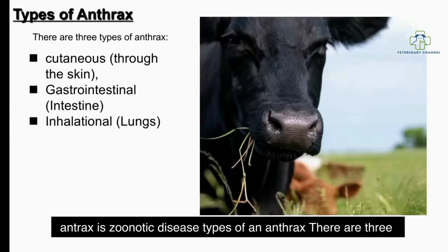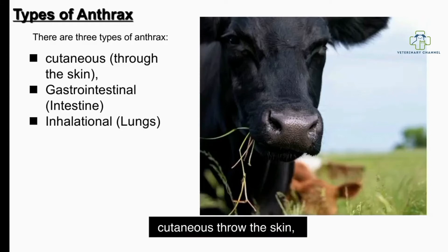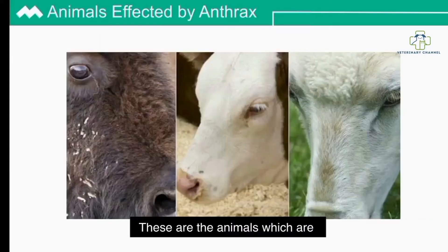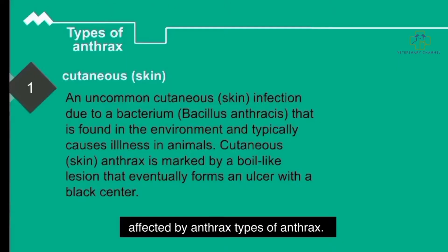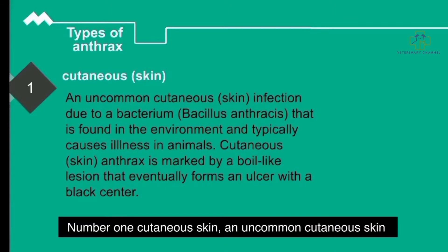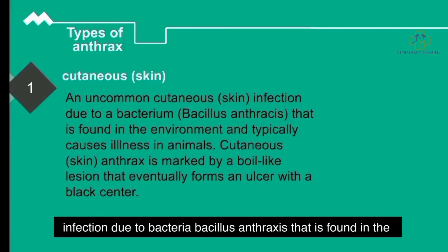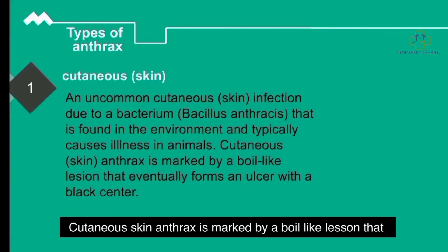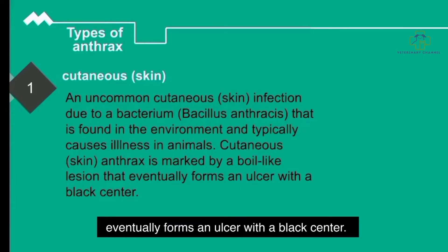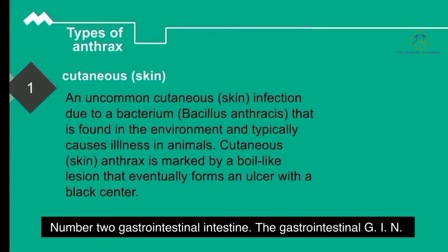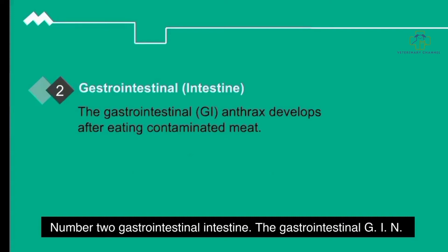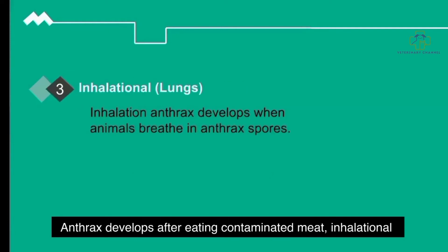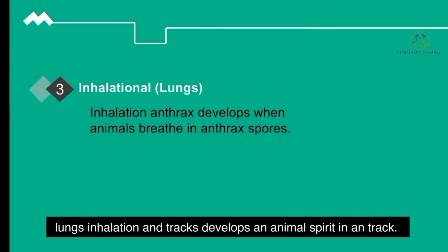There are three types of anthrax: through the skin (cutaneous), gastrointestinal (intestine), and inhalational (lungs). Cutaneous anthrax is an uncommon skin infection due to Bacillus anthracis, marked by a boil-like lesion that eventually forms an ulcer with a black center. Gastrointestinal anthrax develops after eating contaminated meat. Inhalation anthrax develops when animals breathe in anthrax spores.